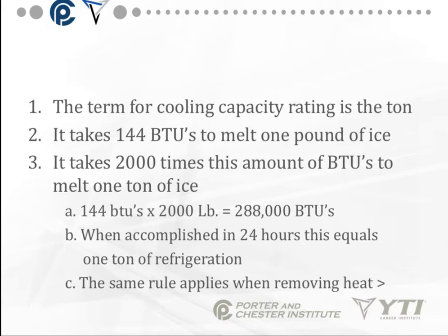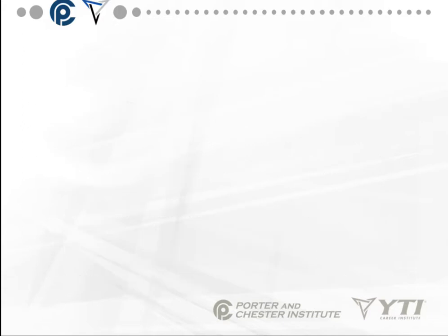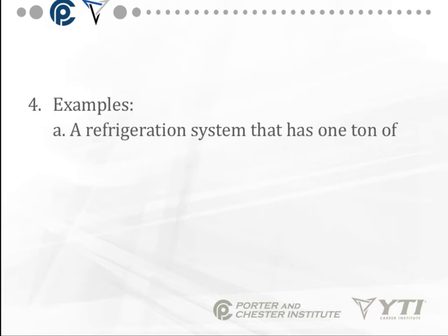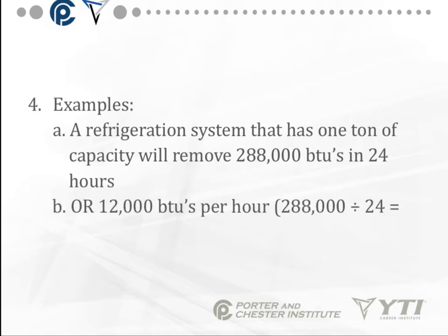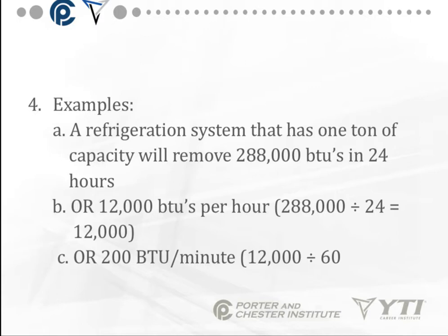We're not melting all the ice at one time — we're melting it over a period of time. The same rule applies when removing heat from a space. A refrigeration system that has one ton of capacity will remove 288,000 BTUs in 24 hours, or 12,000 BTUs per hour. You take 288,000 divided by 24 and that gives you 12,000. That's also 200 BTUs per minute, but we don't use BTUs per minute that much. What I'm primarily concerned about is the 12,000 BTUs per hour.